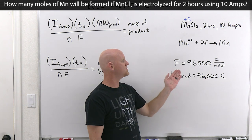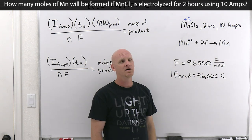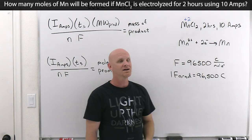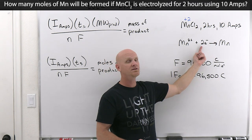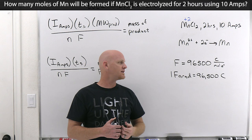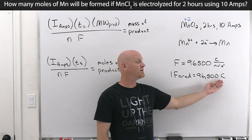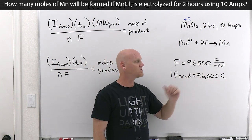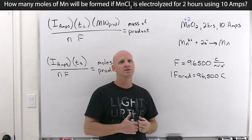If I gave you 96,500 coulombs worth of electrons, that's one mole of electrons. With a two-to-one ratio, one mole of electrons produces only half a mole of manganese. So instead of telling you the moles of electrons directly, I give you coulombs of charge. Using Faraday's constant — 96,500 coulombs equals one mole of electrons — you can convert coulombs to moles of electrons.